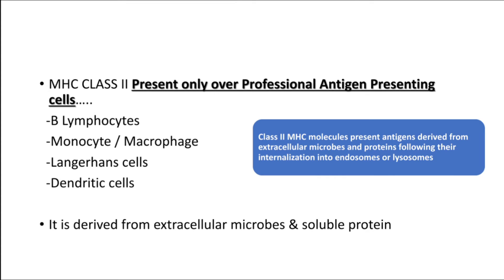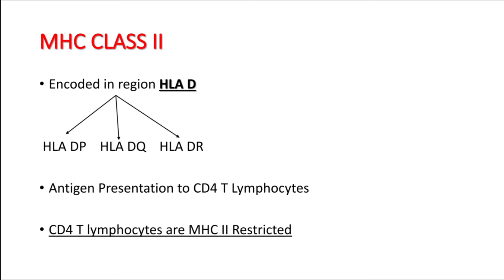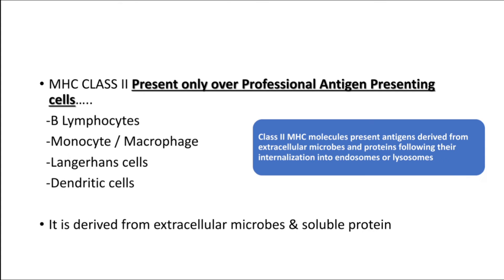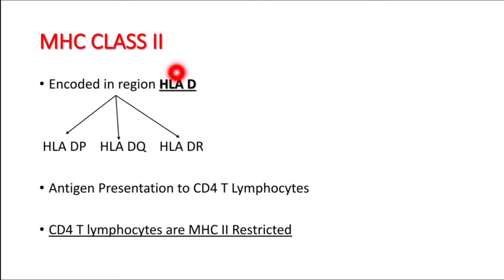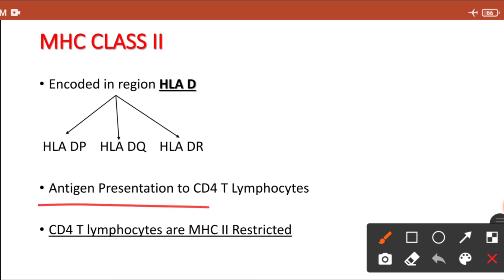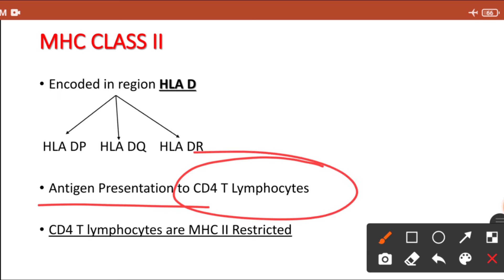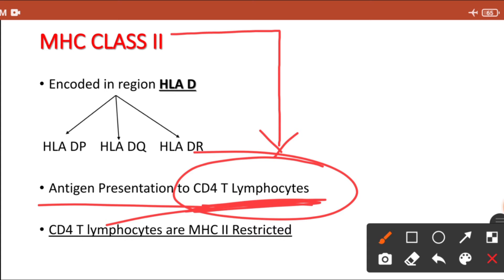MHC class 2 molecule is encoded by the HLA-D gene, which is divided into three portions: DP, DQ, and DR. The MHC class 2 molecule performs the function of antigen presentation to the CD4 T lymphocyte — that is, the T helper cell. So we can say that CD4 T lymphocytes are MHC class 2 restricted.